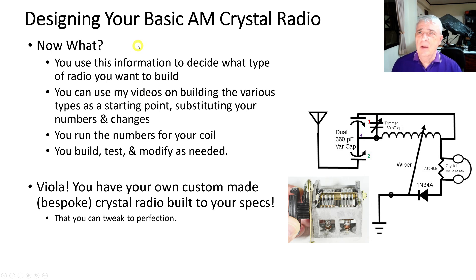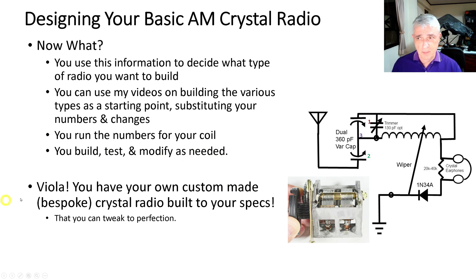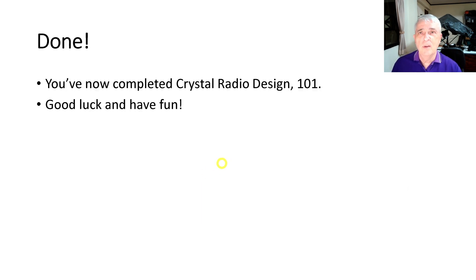Now use this information to decide what type of radio you want to build. You can use reference videos on building different parts and types as your starting point, substitute your own numbers and modifications, run the numbers for your own coil, then build, test, and modify as needed. There you have it — your own custom, bespoke crystal radio built to your specs. You've now completed Crystal Radio Design 101. Good luck and go have some fun!